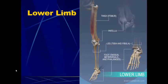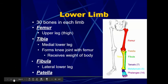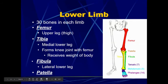The lower limb has 30 bones in each lower limb. There is the femur, which is the upper leg or thigh bone. That is the longest, strongest bone in the entire body. In an adult, it is approximately one-fourth of the person's overall height.